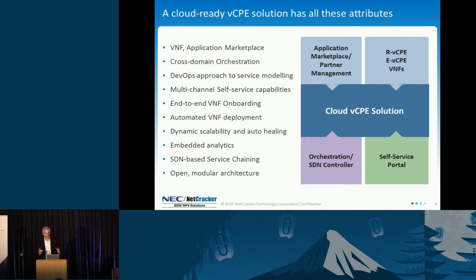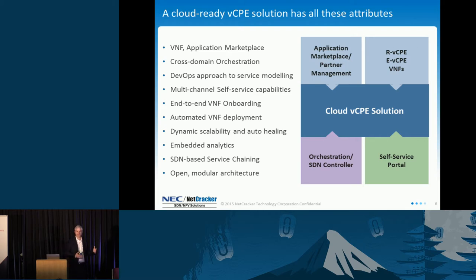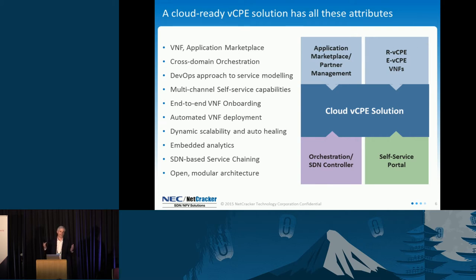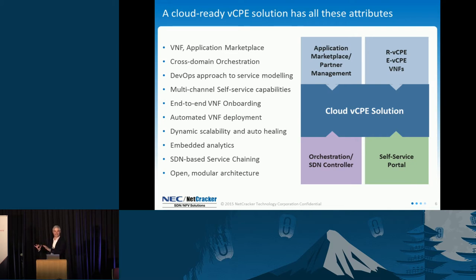And then SDN-based service chaining. What we need is dynamic creation of internal communications between servers, VMs, and VNF elements. Service chaining is fundamental to creating new and compelling offers. For example, for the SMB market, we need to be able to direct the customer's traffic to whatever applications they're paying for — be it security, WAN optimization, application acceleration, or intrusion detection. That only happens with SDN control working in coordination with an overall orchestration capability. So vCPE is about virtualizing the customer premises equipment, but in order to operationalize and make it commercial, these are the things we also need behind the scenes.